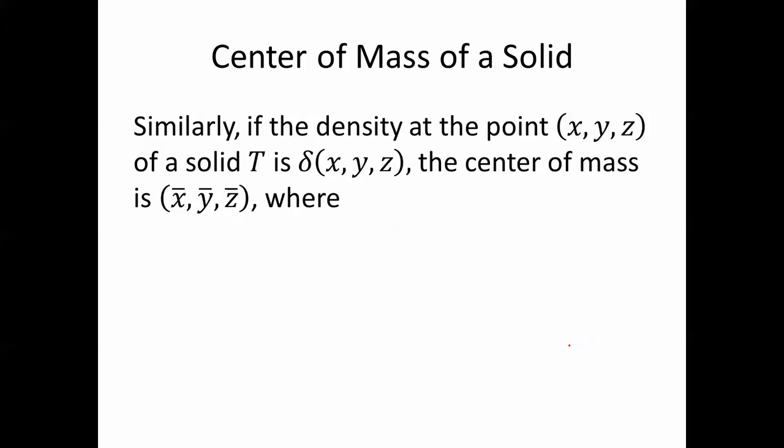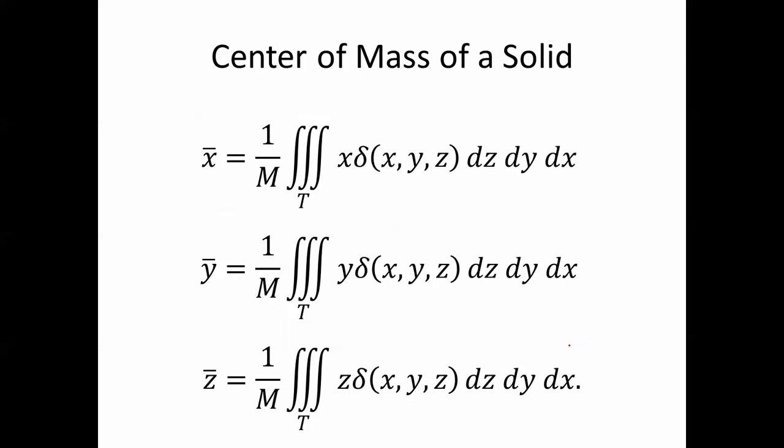Similarly, if the density of the point xyz of a solid T is delta of xyz, the center of mass is x bar y bar z bar, where x bar is 1 over m times the triple integral of x delta of xyz dz dy dx, y bar is 1 over m times the triple integral of y delta of xyz, and z bar is 1 over m times the triple integral of z delta of xyz.